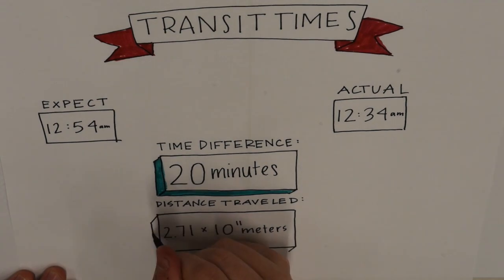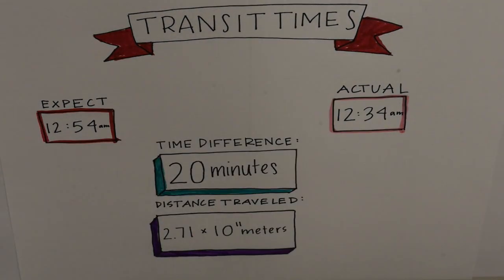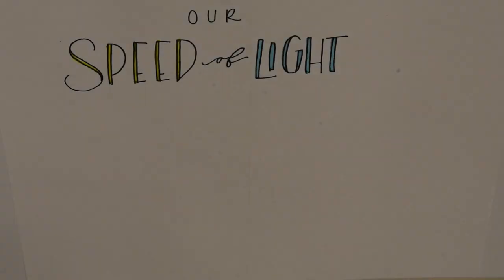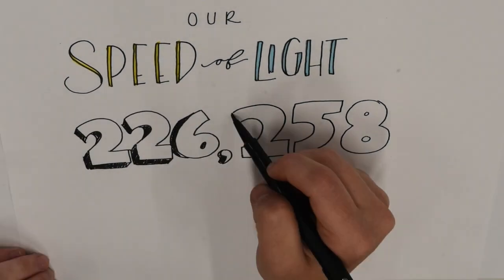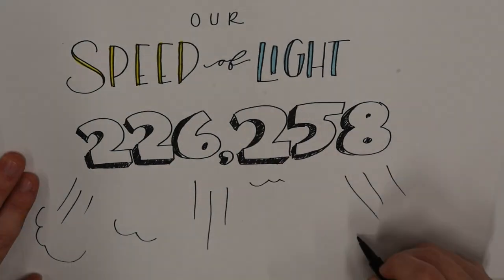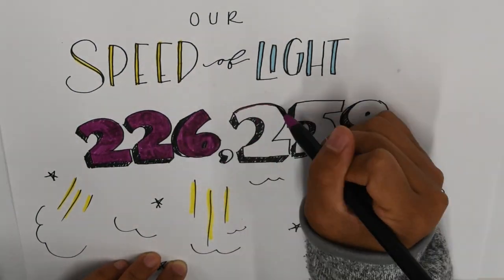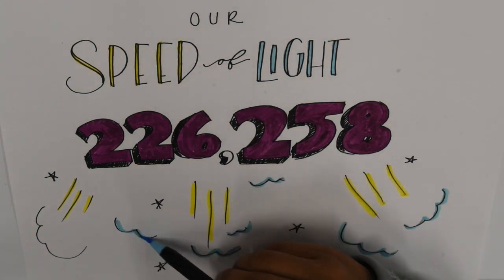and noting that the Earth had moved 2.71 times 10 to the 11th meters since our initial transit, we calculated the speed of light. Our final speed is 226,258 kilometers per second. This is a better estimate than Ole Rømer's and on the same order of magnitude of the accepted value, but still off by a factor of 1.32.